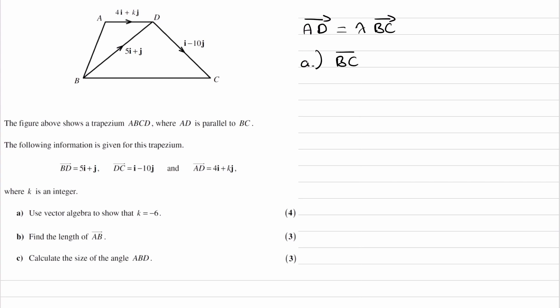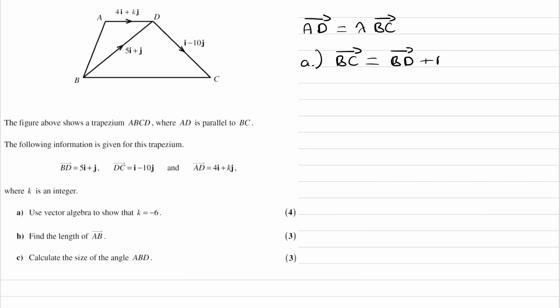So we can do that by first of all working out what BC is. So the vector BC is the same thing as going from B to D, so from there to there, and then from D to C afterwards, so plus DC.